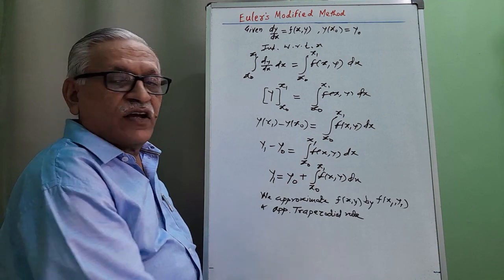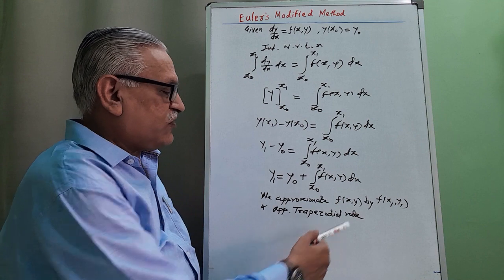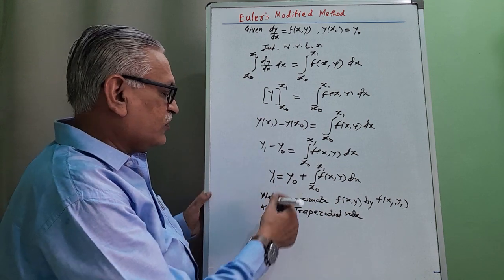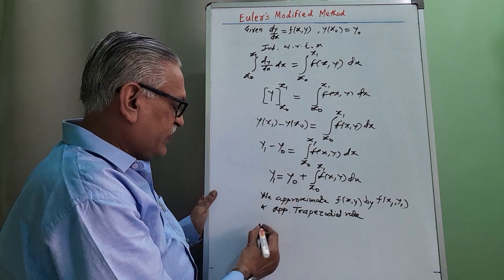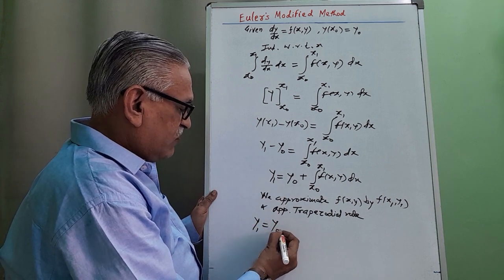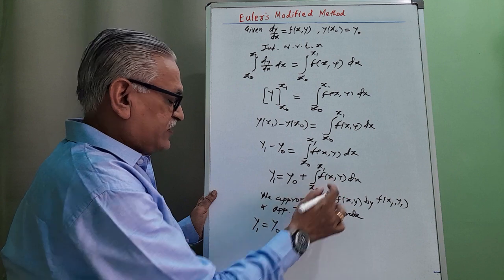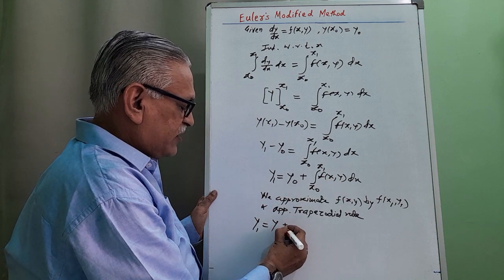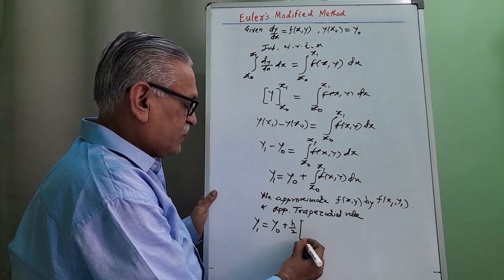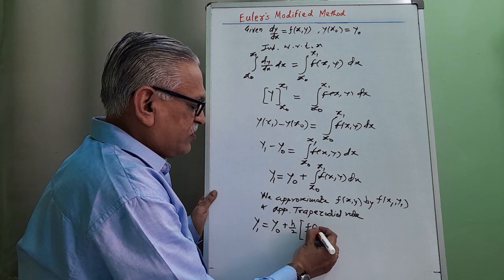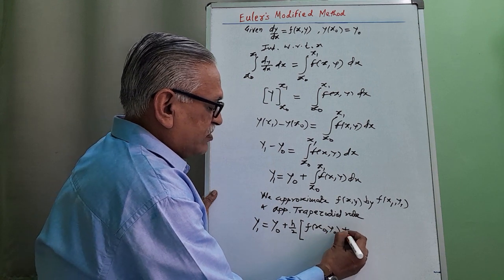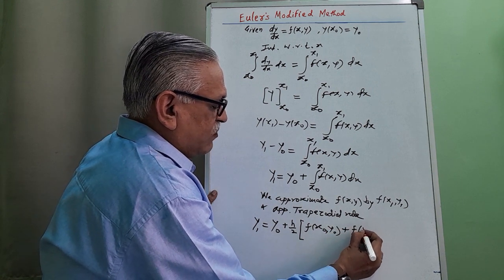We approximate f(x, y) by the function f(x₁, y₁) and apply the trapezoidal rule, giving y₁ equals y₀ plus h/2 times [f(x₀, y₀) plus f(x₁, y₁)].